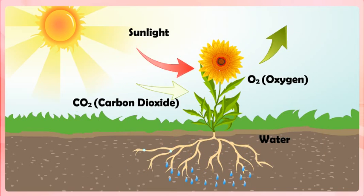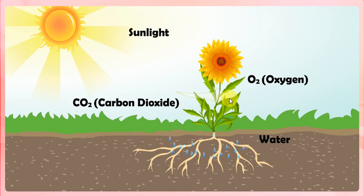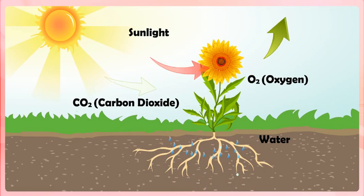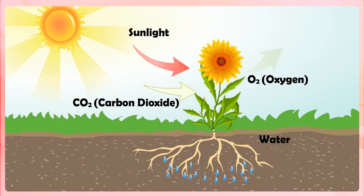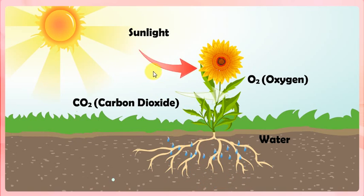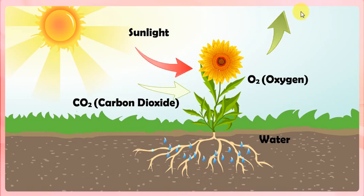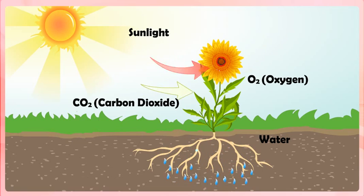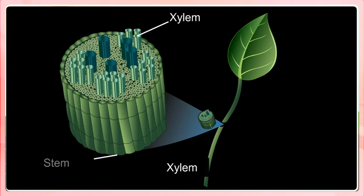Water present in the soil is absorbed by the roots of a plant and then transported to the leaves through vessels which run like interconnected pipes throughout the roots, stem, branches and leaves. The tiny pipe-like vessels which transport water from the roots of a plant to its leaves are called xylem.